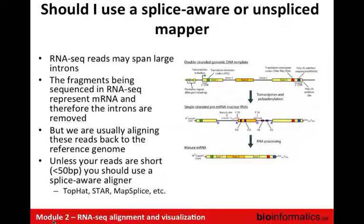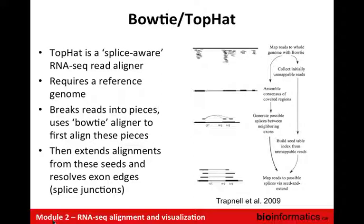Should you use a splice-aware or unspliced mapper? RNA-seq reads span large introns in some cases, and the fragments represent messenger RNAs with introns removed, so when aligning back to the genome we have to account for introns that need to be spliced out of the alignment. Generally, unless your reads are very short — say 30 to 40 bases — you won't want to use a non-splice-aware aligner. If reads are greater than 50 bases, you can use splice-aware aligners like TopHat, STAR, or MapSplice.